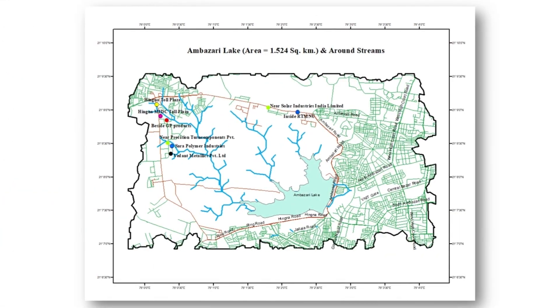The map of Ambazari Lake is shown here, and it can be observed that various streams are coming from the Lava Hills side. The area of Ambazari Lake is 1.524 square kilometers.